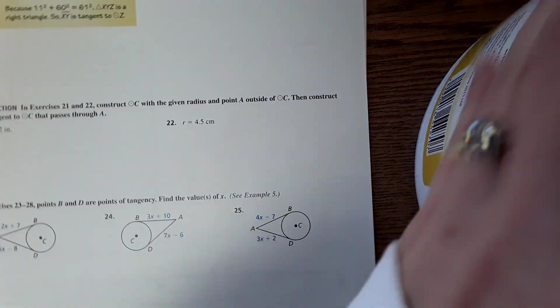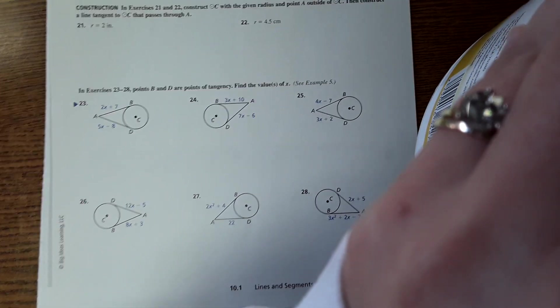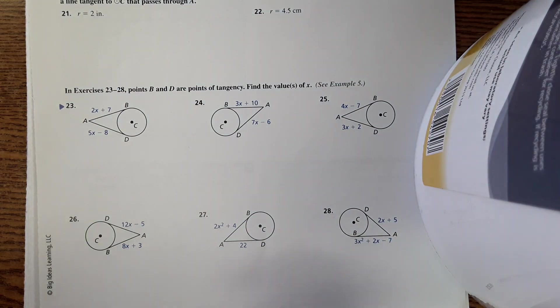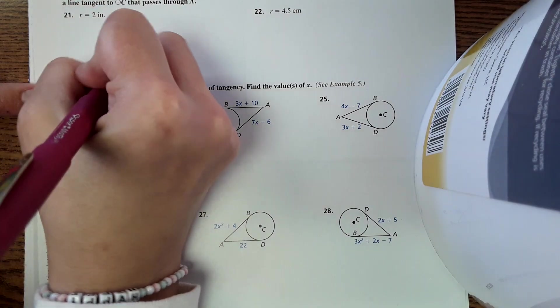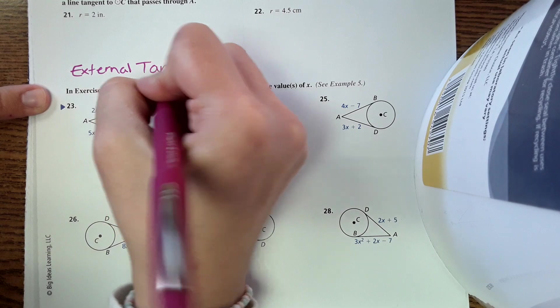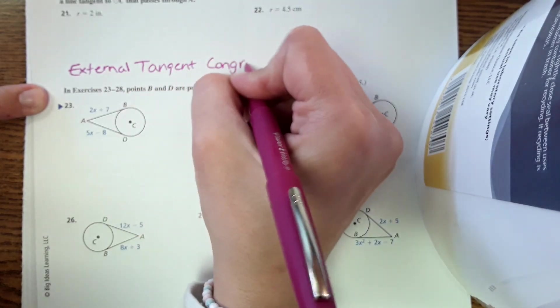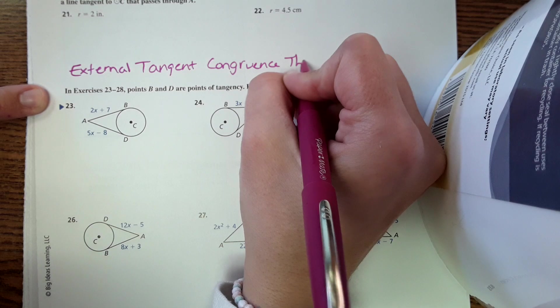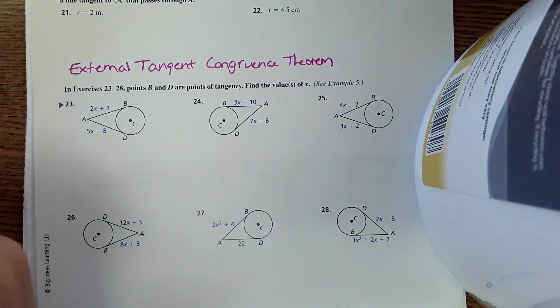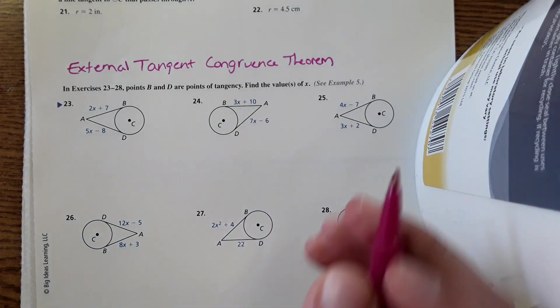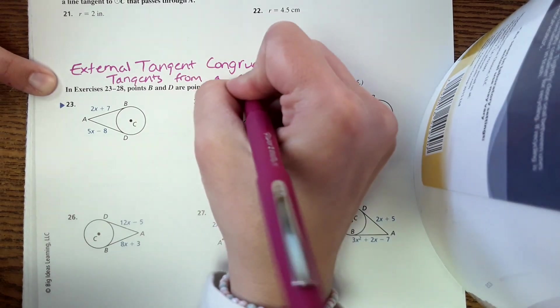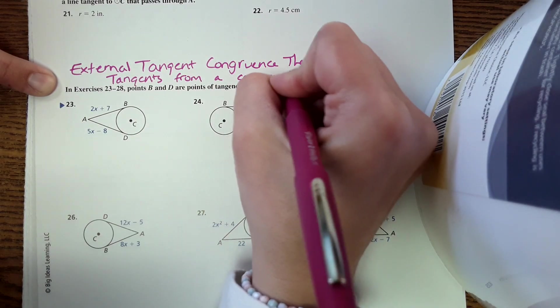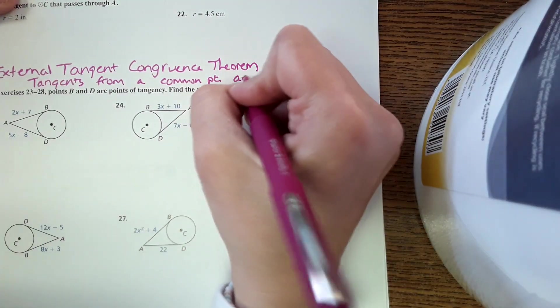One more problem. Over here, we're going to be focusing on the bottom half of the page, 23 to 28. We're not doing all of this. I'm just introducing the concept. The theorem for this is called external tangent congruence theorem. So based on this theorem, tangent segments from a common endpoint are congruent. So tangents from a common point are congruent.